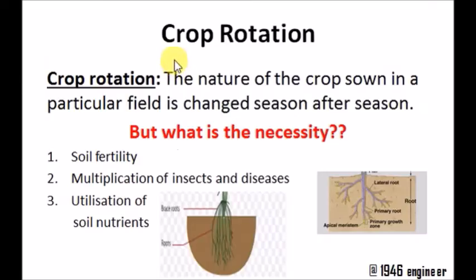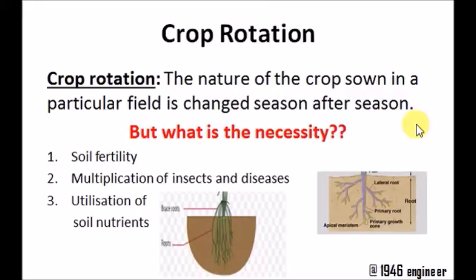If we look at the definition of crop rotation, it states that the nature of the crop sown in a particular field is changed season after season. It suggests that if we sow crop X in season 1, we should change to crop Y in season 2.